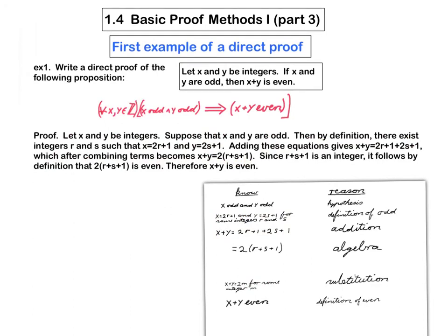Now I want to be able to say that, so now I want to make use of this thing here. And so I observe that, so I have to verify that this is even. And so I say, since this is an integer, it follows, by definition, that 2 times that integer is even.